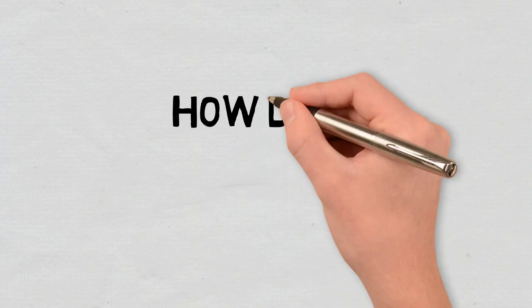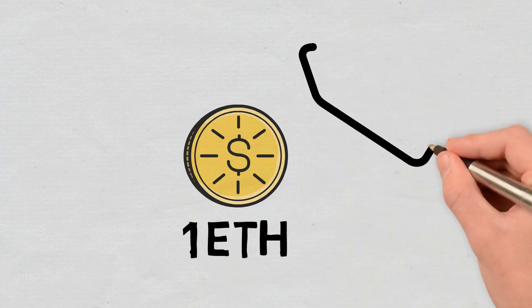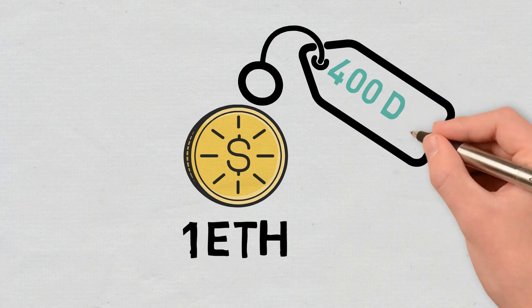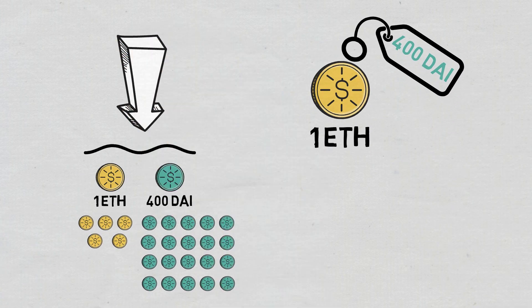How does Impermanent Loss Occur? In this case, let's suppose that the ETH price increases to 400 DAI. If this happens, arbitrage trading strategies will add DAI to the pool and remove ETH until the ratio reflects the current price.